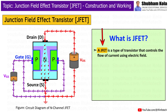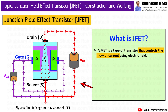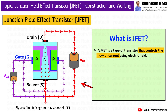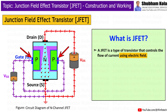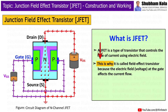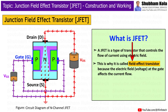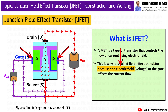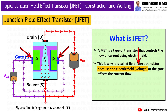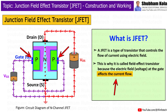A JFET is a type of transistor that controls the flow of current using an electric field. This is why it is called a Field Effect Transistor — because the electric field, i.e. voltage, at the gate affects the current flow.